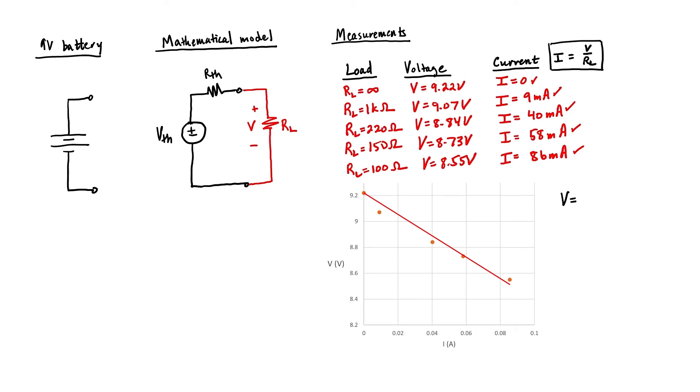From the plot, we can establish a trend line and see the relationship between current and voltage if we model it as a straight line. The voltage is negative 8.26 times the current plus 9.22.